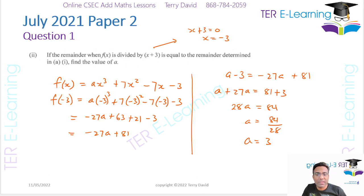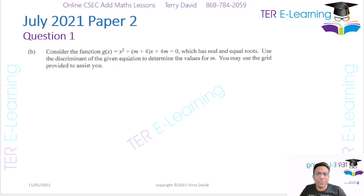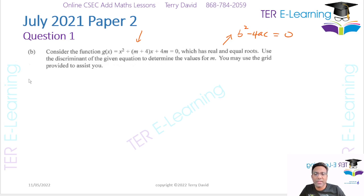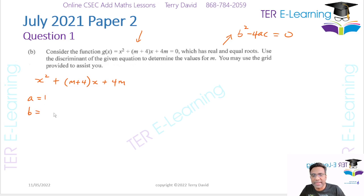The next part, Part B: they give us a function g of x equals x squared plus (m plus 4)x plus 4m equals 0, which has real and equal roots. This is a quadratic function. When we have real and equal roots, b squared minus 4ac must equal 0. Looking at the coefficients: a equals 1, b equals m plus 4, and c equals 4m.